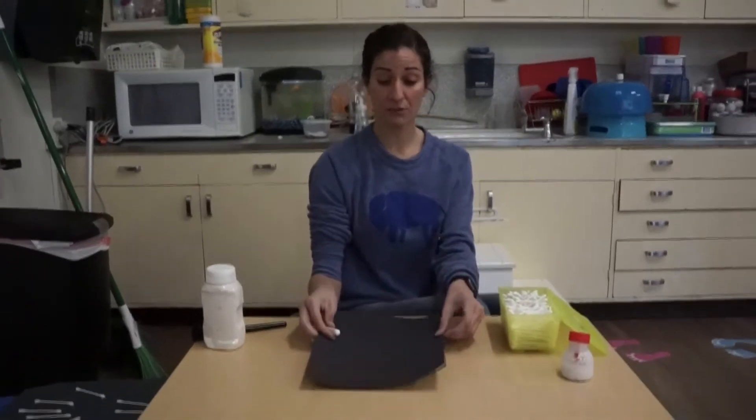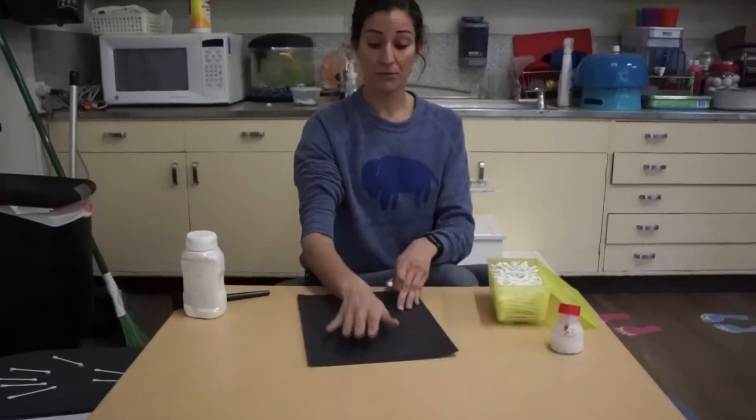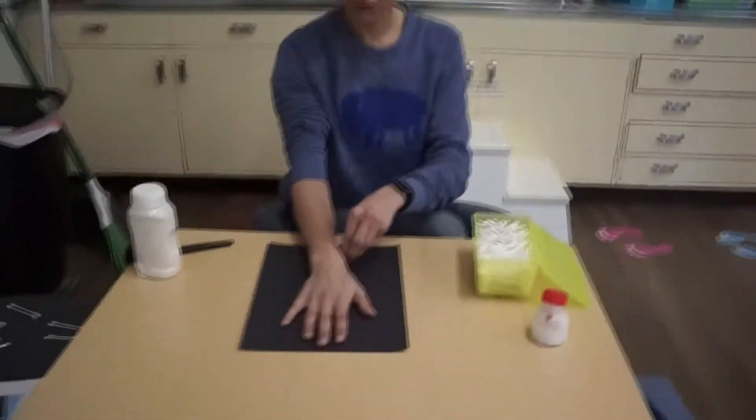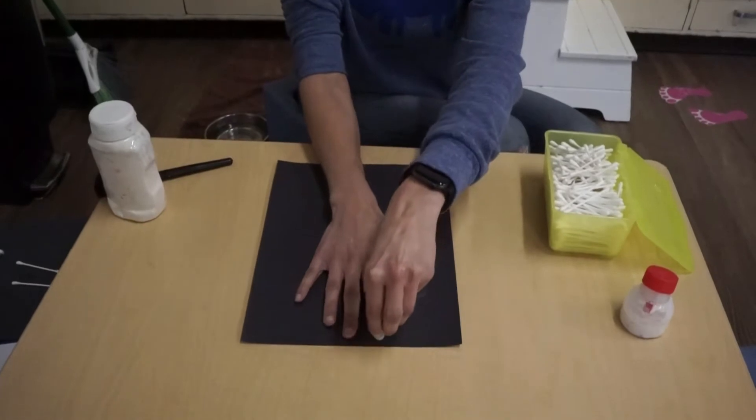Okay, so first we're going to start with laying your black paper down and then putting your hand on your paper and using your white crayon to trace your hand onto the paper.